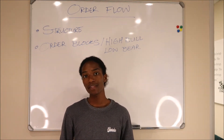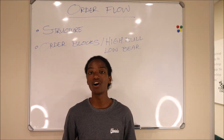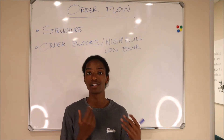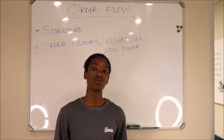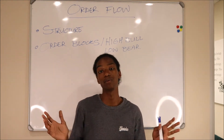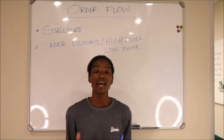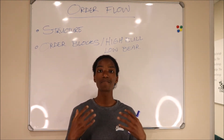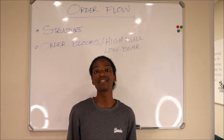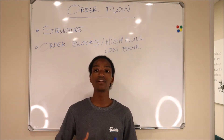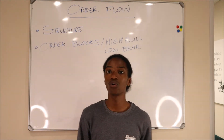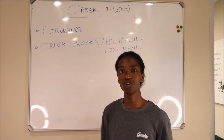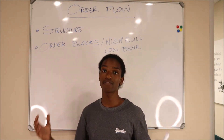All order flow is, is just gauging or getting an idea of which direction the orders in the market are being executed. Remember, there are different market participants - obviously us retail traders, and also institutions, hedge funds, all of those people with an endless amount of money essentially. The concept of order flow is identifying where smart money or the big money is basically placing their orders - where is the big money looking to take the market to? That's all order flow is. Now going into order flow, we'll start off with structure.